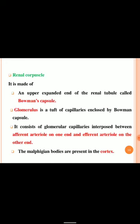The renal corpuscle is made up of an upper expanded end of the renal tubule called Bowman's capsule. The glomerulus is a tuft of capillaries enclosed by Bowman's capsule, consisting of glomerular capillaries interposed between the afferent arteriole at one end and the efferent arteriole at the other end. The Malpighian body is also present in the cortex portion.